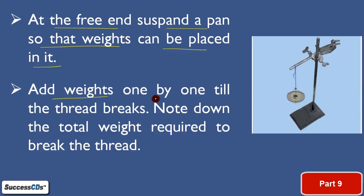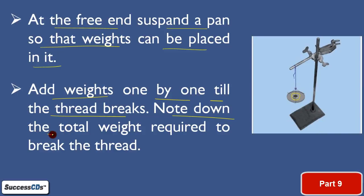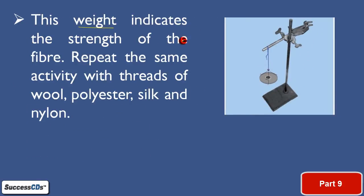Then add weights one by one till the thread breaks. Chote se chote weight se shuru karke, thoda thoda weight bada karte jaiye, tab tak jab tak yeh thread toot na jaye. Jis time yeh toot jaye, us time note kariye the total weight required to break the thread. Kitna weight require hua jab yeh thread toota — this will indicate the strength of the fiber.